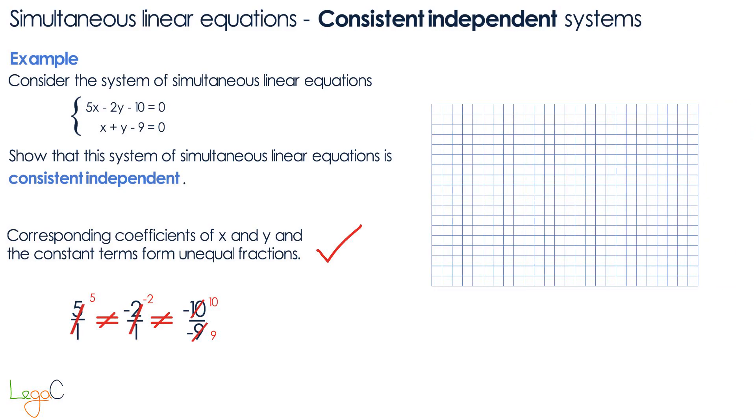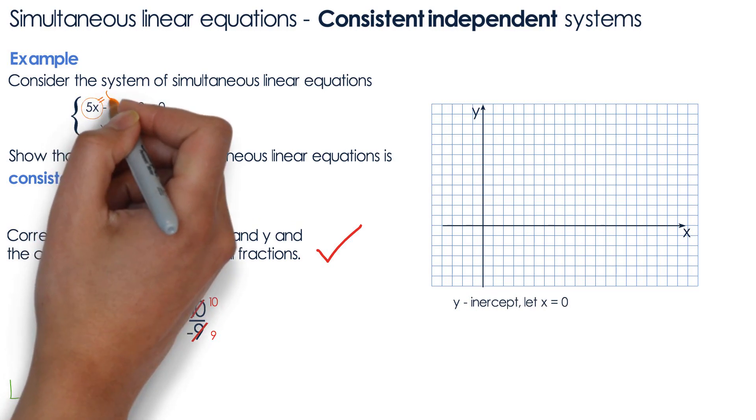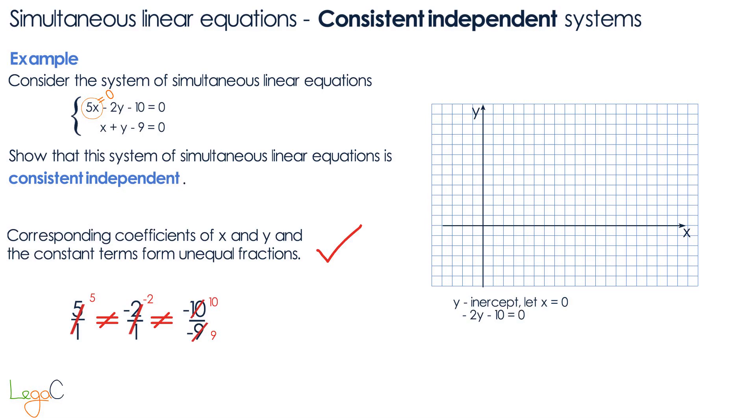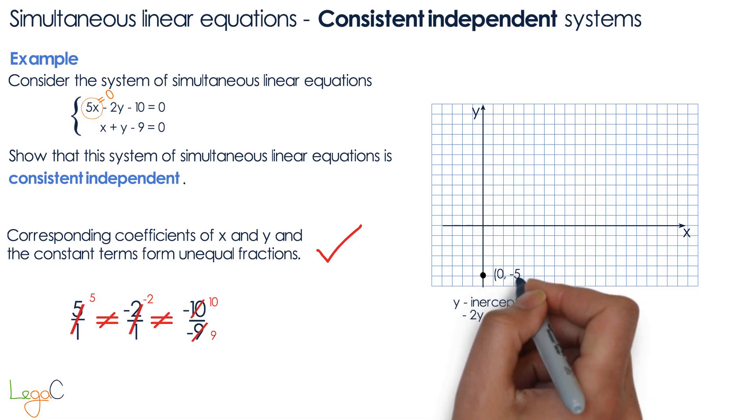I'm going to start with the first equation and calculate the y-intercept. So let x equals 0 which means 5x equals 0 so the equation becomes minus 2y minus 10 equals 0. If we solve this for y we end up with y equals negative 5. We plot this point on the graph and we label it.